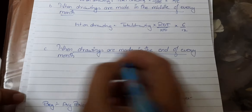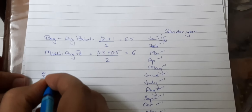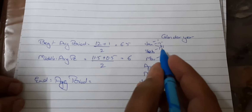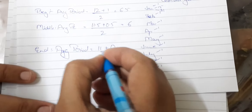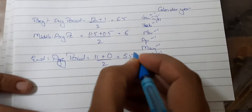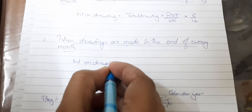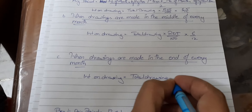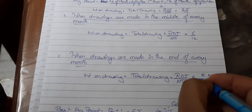When drawings are made at the end of every month - January 31st through December 31st - January is not included so 11 months are left after the first transaction, and December 31st leaves 0 months. So 11 plus 0 divided by 2 equals 5.5. The formula becomes: interest on drawing equals total drawing into rate of interest by 100 into 5.5 by 12.